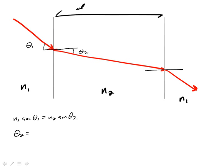I'm just dividing by n2 on both sides. But in order to get theta, I have to take the arc sine. So let's take the arc sine of all of that, and that gives us theta 2.